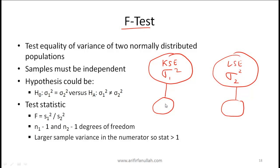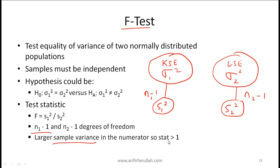The F-statistic is the ratio of the two sample variances. There are two degrees of freedom: n1 minus 1 for the Karachi sample and n2 minus 1 for the Lahore sample. Importantly, always place the larger sample variance in the numerator so the F-statistic is greater than one. Suppose the resulting F-statistic is 90.